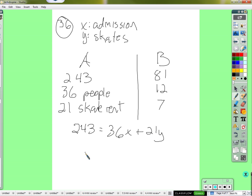Second equation, and it'll be really similar, because they did a really similar thing. $81 is the sum of admission and skate rentals. The admission is 12 people times x dollars per admission, plus the skate rentals, that's 7 people times the cost of renting skates.